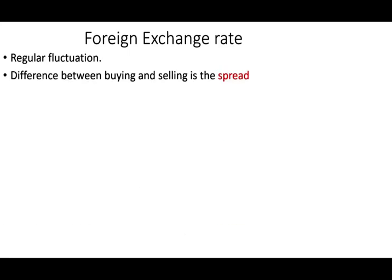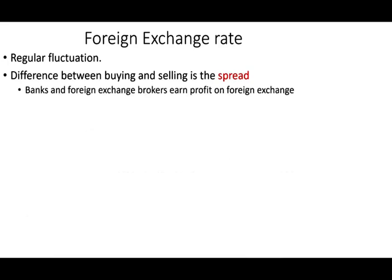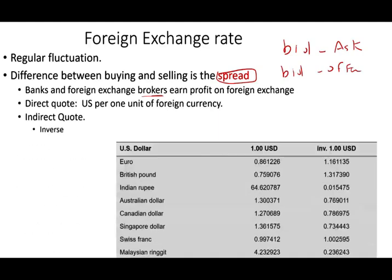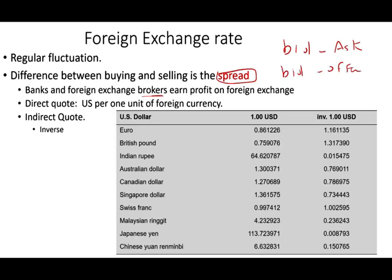Foreign exchange rates fluctuate on a regular basis — they go up and they go down. The difference between buying and selling a foreign currency is called a spread. This is how banks and foreign exchange brokers — like those you see at airports — earn a profit on foreign exchange. They will have something called a bid-ask, or sometimes bid-offer. For example, if I want to travel to Canada and I go to the bank, they would show me the Canadian dollar rate and I pay a certain price.